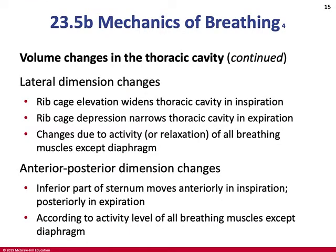Lateral changes: rib cage elevation widens the thoracic cavity when you inhale, and rib cage depression narrows it when you breathe out. The activity of all breathing muscles except the diaphragm results in either more extensive ventilation or a more rapid respiratory rate. Anterior-posterior dimension changes: the inferior sternum moves up when you inspire and back when you expire.